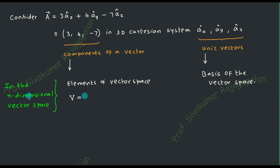Whatever job the unit vector is doing, that job will be done by the basis vector in higher dimensional space. The only difference is the renaming when we move from three-dimensional to n-dimensional vector space. You can even maintain the name basis vector for ax, ay, and az — there is nothing wrong in that. So ax-cap, ay-cap, and az-cap are the basis vectors in the three-dimensional Euclidean space. So the terminology is what is important: we delete the name unit vector and bring the new name called basis.